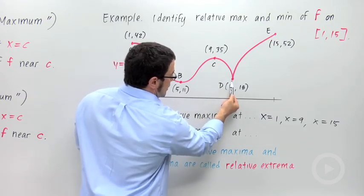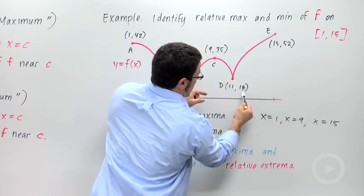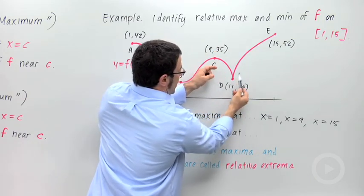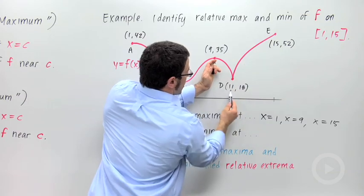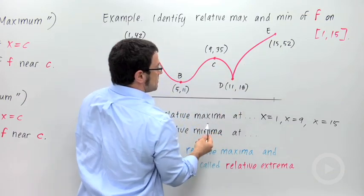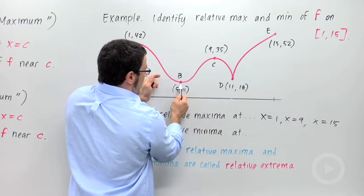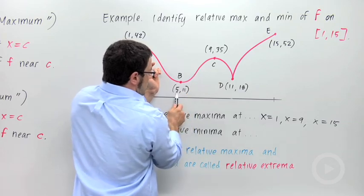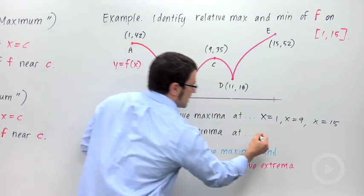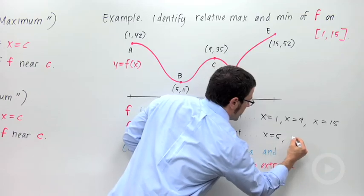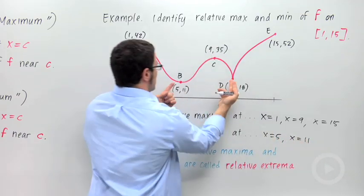It is the lowest point in a neighborhood around it. That value 18 is going to be the lowest point. And the minimum actually occurs at x equals 11. And here, we have a minimum value of 11. And that minimum occurs at x equals 5. So there are relative minima at x equals 5 and x equals 11. These two points.